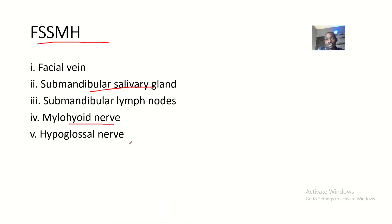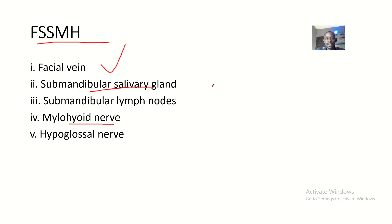Now, having pointed out everything in the digastric triangle, let's relate the mnemonics to what we have listed. The mnemonic is FSSSMH — I call it 'first MH.' The F stands for facial vein, the first S is submandibular salivary glands, the second S is submandibular lymph nodes, the M is mylohyoid nerve, and the H is hypoglossal nerve.